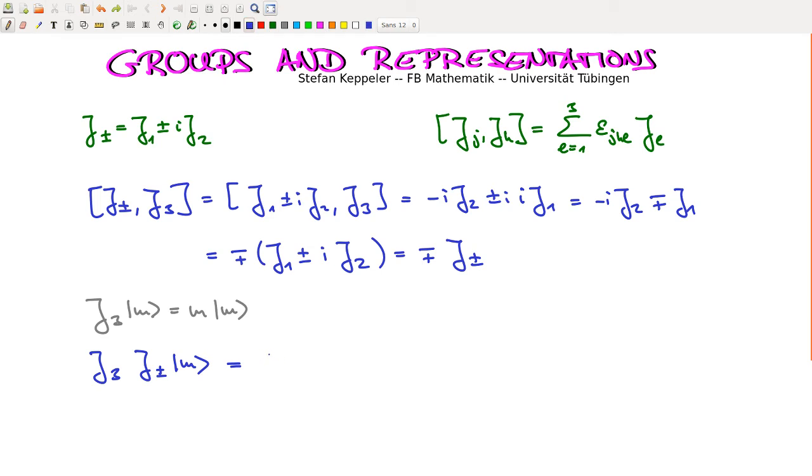So with this commutator here, we can just exchange J3 times J plus minus for J plus minus times J3. And then we have to compensate by subtracting the commutator, J plus minus J3. Okay, so the first term of the commutator cancels, and the last term comes with the right minus sign. And the whole thing times M.